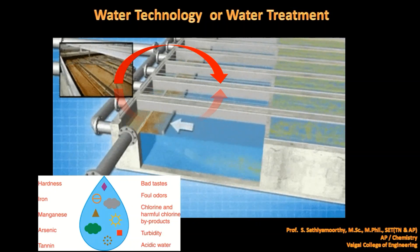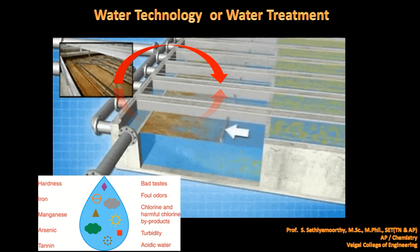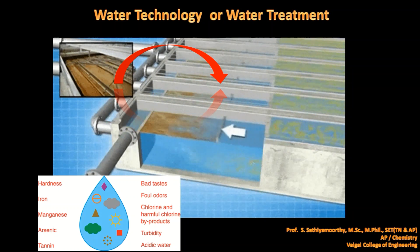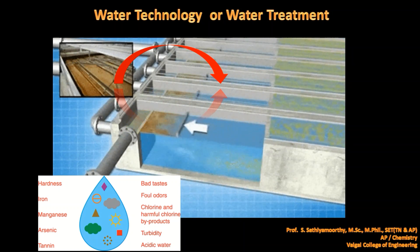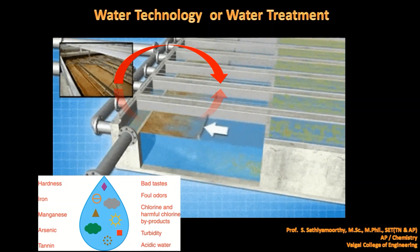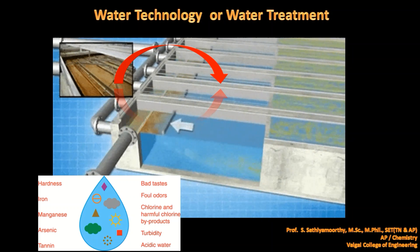To make water fit for industrial and domestic purposes, we have to convert impure water to pure water, which means we have to remove the impurities present in it. What are the impurities usually present in water? They include hardness, iron, manganese, arsenic and other harmful metal salts, tannins from animal products, bad and foul odors, harmful chlorine products, turbidity, acidity, and alkalinity. In some water only specific impurities will be present.